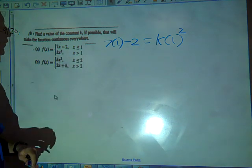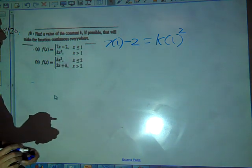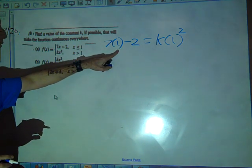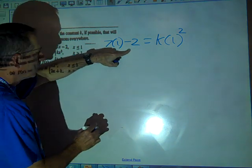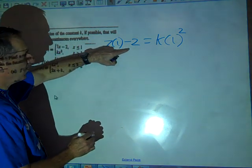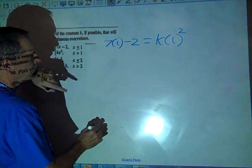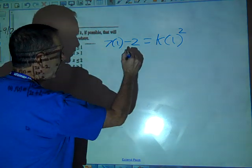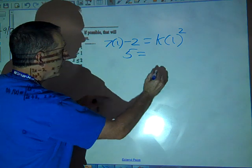Can we do any combining at this point? Yes. 7 minus 2, it's going to be 5. It'll be 5, right? Equals k squared.